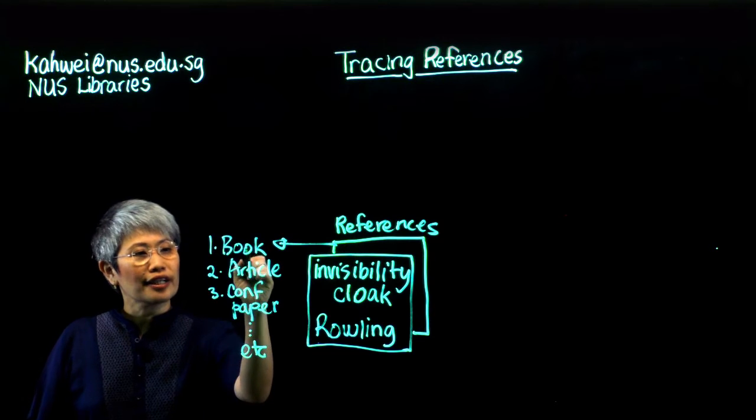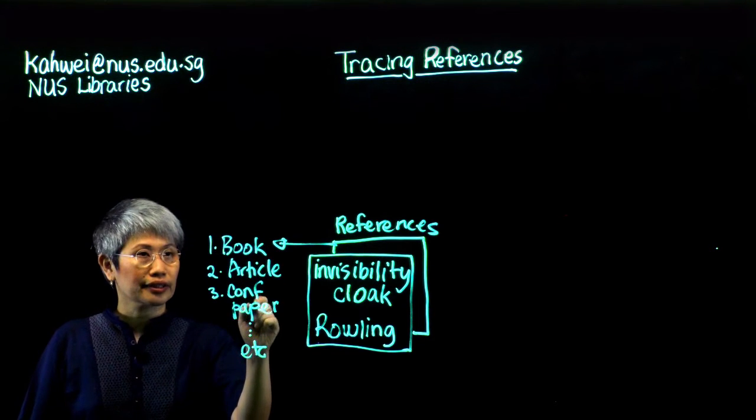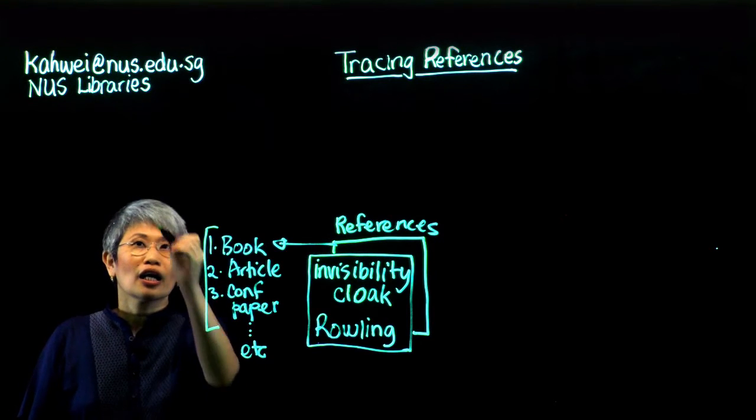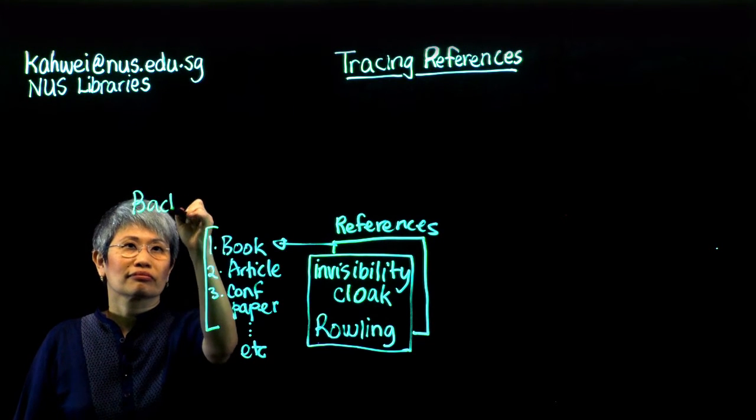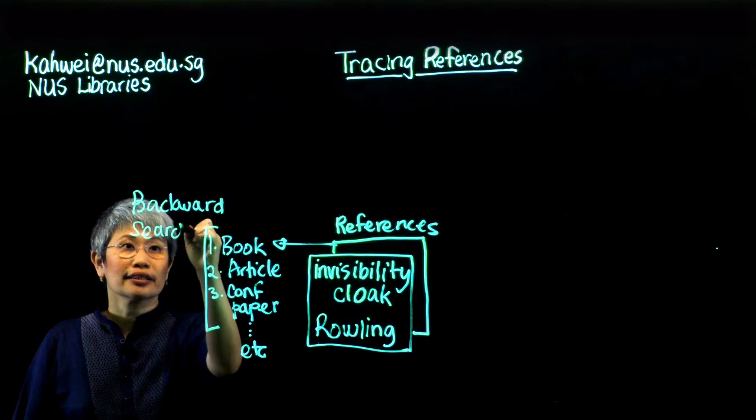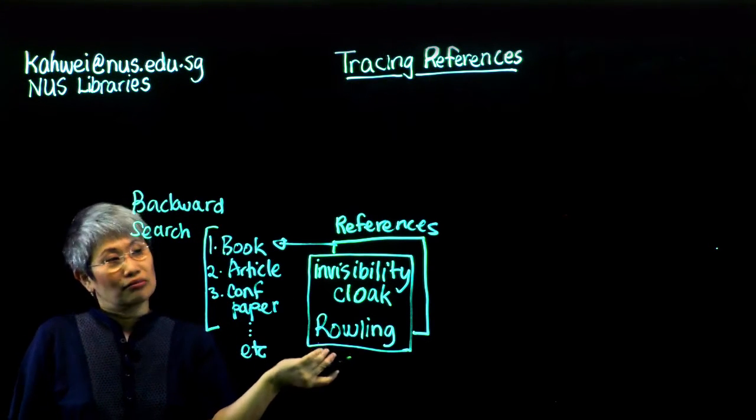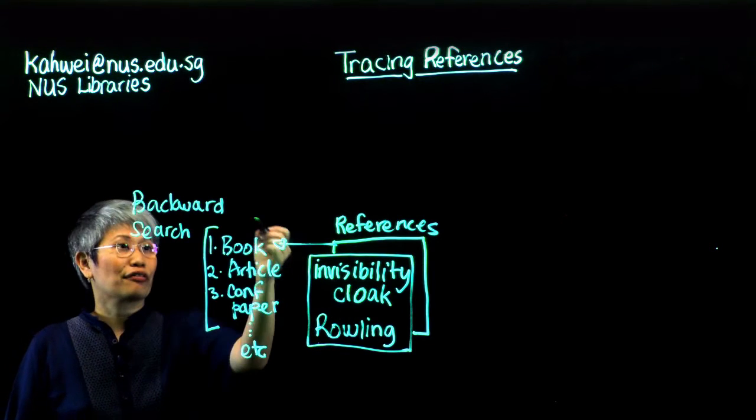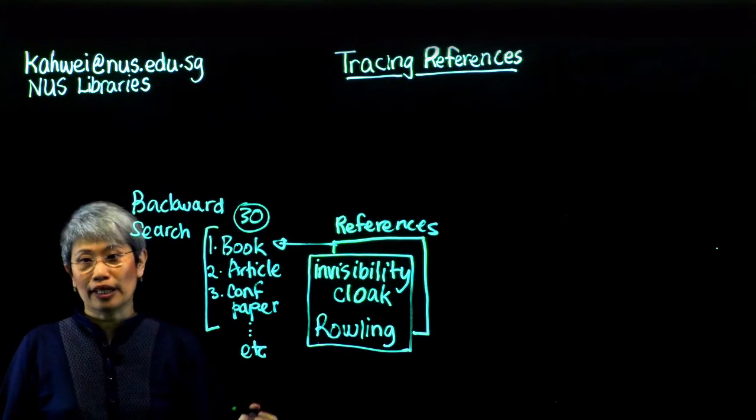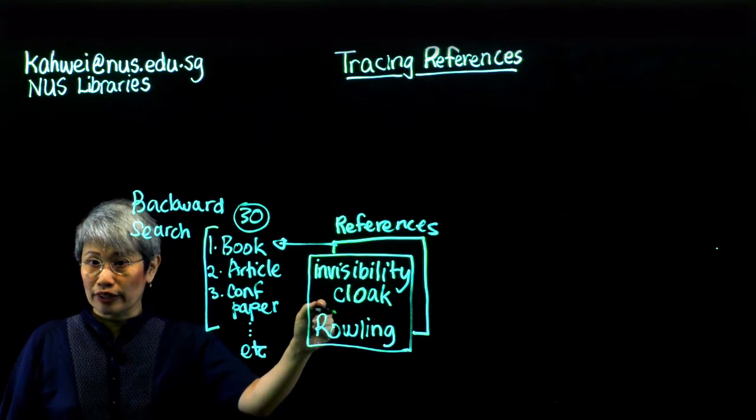If you were to search for every single one of these publications or trace them, you would be doing what we call a backward search. Now, a backward search such as this will probably yield, well, let's say she uses about 30 references. You would have found 30 publications that Professor Rowling used.